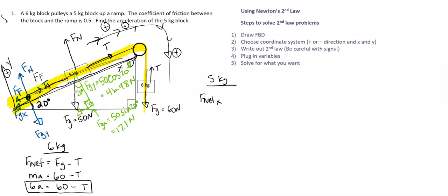So we have F net X. Again, we're only looking at the direction it is accelerating in. So let's see, we have in that direction, we're looking at these three forces. So we have F, or tension force, which is pulling it up the ramp,